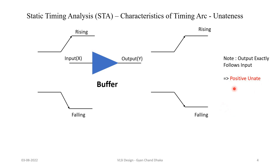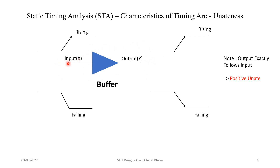The first example is a buffer. In a buffer, whenever there is a rising transition happening at input the output will also rise, and whenever there is a falling transition at input the output will also fall. Remember that a buffer has only one input and one output, so we have only one timing arc.